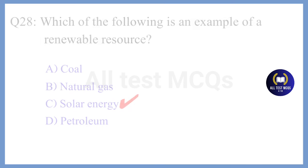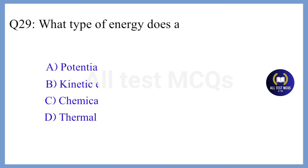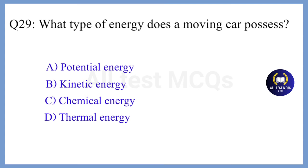Question 29. Which type of energy does a moving car possess? The correct answer is Option B. Kinetic energy.